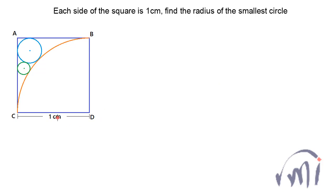This is square ABCD with each side one centimeter, so the radius of the quarter circle is also one centimeter. We have one more circle which is tangent to this quarter circle, and sides AB and AC are tangent to that light blue circle. Then we have a smaller circle which is tangent to both this circle and the orange quarter circle. We have to find the radius of this smallest green circle.